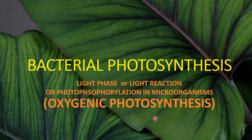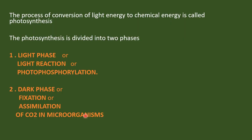In part two, that is the next continuous part, we are going to discuss about anoxygenic photosynthesis. The process of conversion of light energy to chemical energy is defined as photosynthesis.